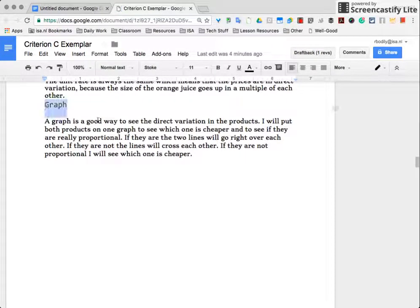This is a perfect example. So this student said, 'Okay, there's going to be a graph coming up. A graph is a good way to see that direct variation in the products.' Direct variation is one of the terms, the vocabulary words we want. 'I will put both products on one graph to see which one is cheaper and to see if they're really proportional.' So explaining: why am I going to be using a graph? Why are graphs important?